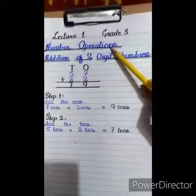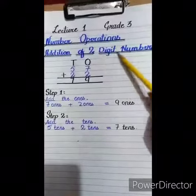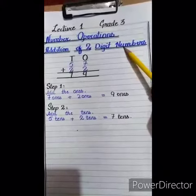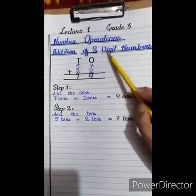This way, we will read addition of 2-digit numbers, addition of 3-digit numbers, and addition of 4-digit numbers. First of all, we will read addition of 2-digit numbers.